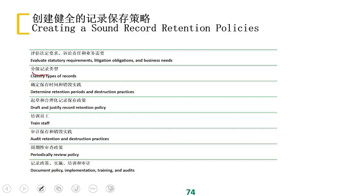In the preservation strategy, data classification defines your preservation time — how long you store it — and the method of destruction. Business needs also shape the preservation strategy: the location of preservation, training for employees on how to preserve data, and the method of data preservation. We also need to periodically review the policy, since some data may need reclassification, which affects the preservation location and implementation method.